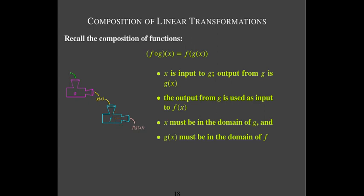We represent functions as little machines with an input funnel and an output funnel. x goes into g, g changes it and outputs g of x. Then g of x is used as input to f, and f may change g of x in some way, giving f of g of x as output. We are daisy-chaining these functions together, which means g of x has to be in the domain of f, and x has to be in the domain of g.